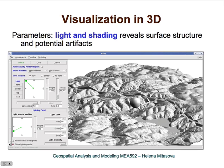Here is one example of the parameters used to display three-dimensional data — that's lighting. Lighting is controlled through its direction and height over the surface. The properties of light and the surface can also be modified, for example the light intensity or the shininess of the surface. This is quite useful when you want to highlight certain features in the surface or if you are looking for potential artifacts.